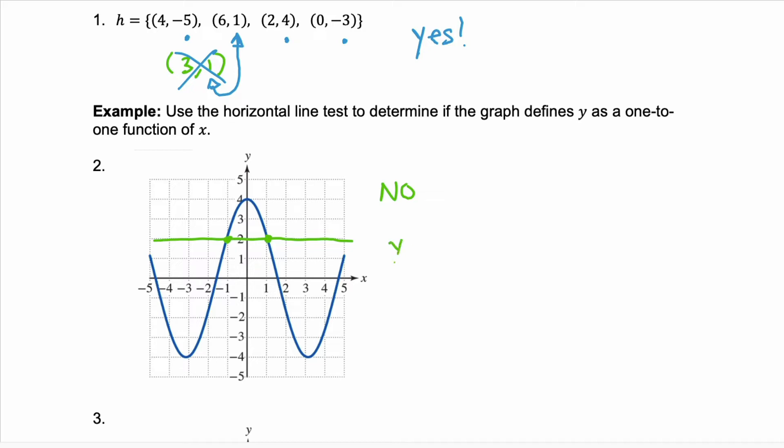This horizontal line intersects in two points. So no, this graph is not a one-to-one function. Or you can see that when y equals two, this range value here, we have an x value equal to negative one, and we have an x value equal to one.